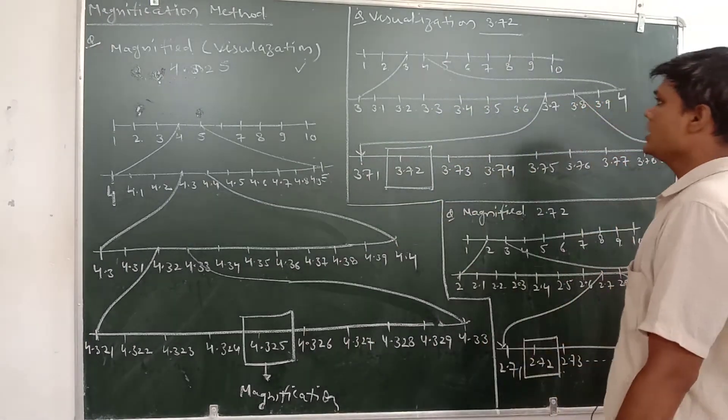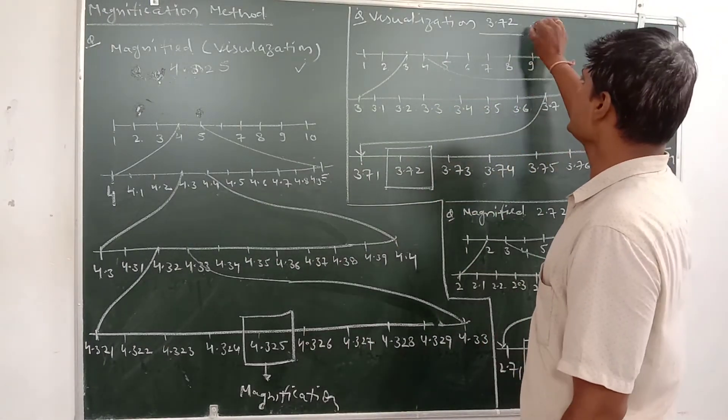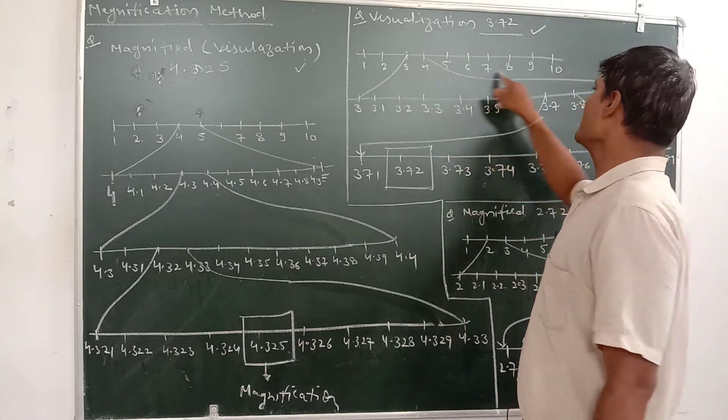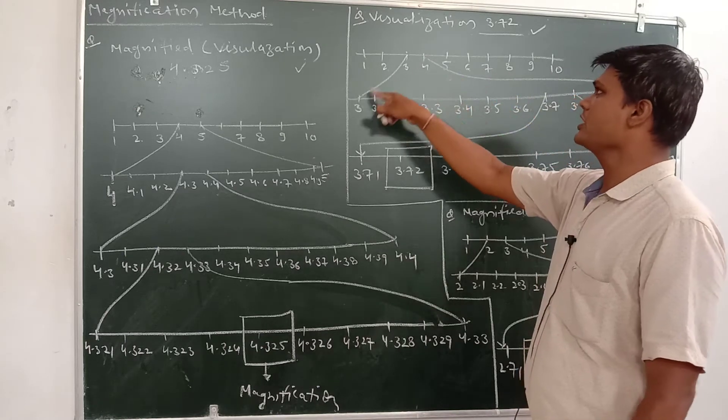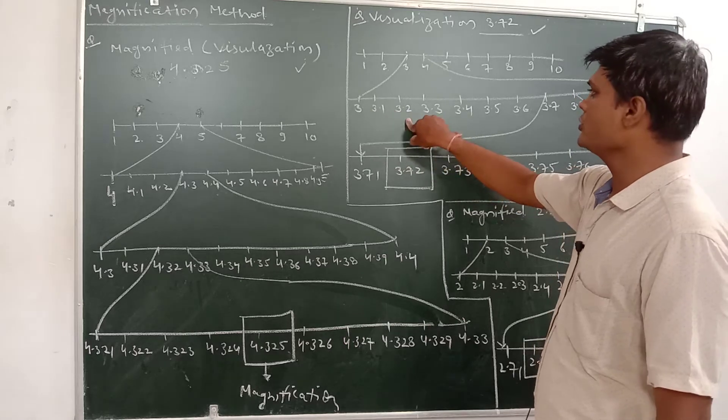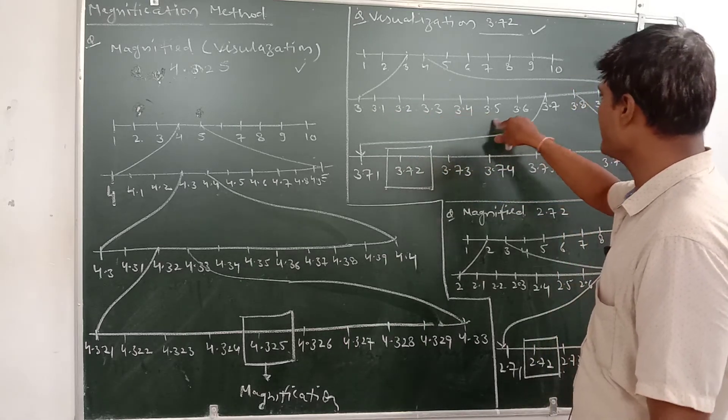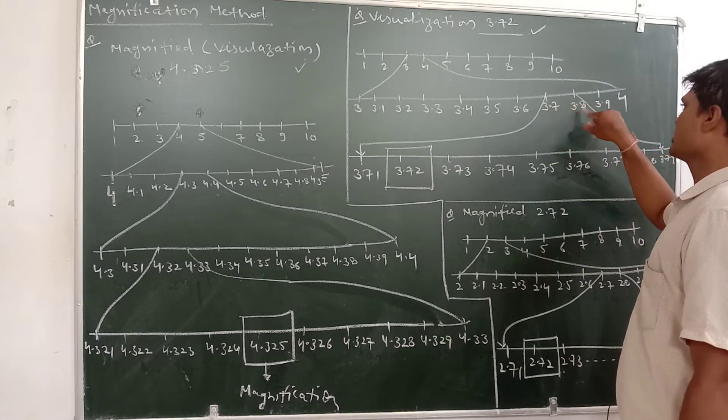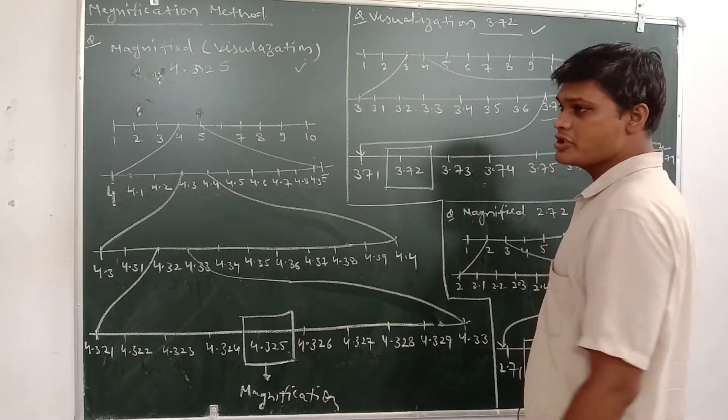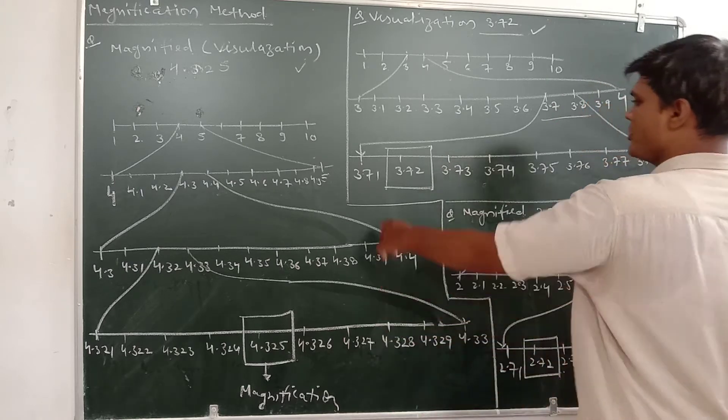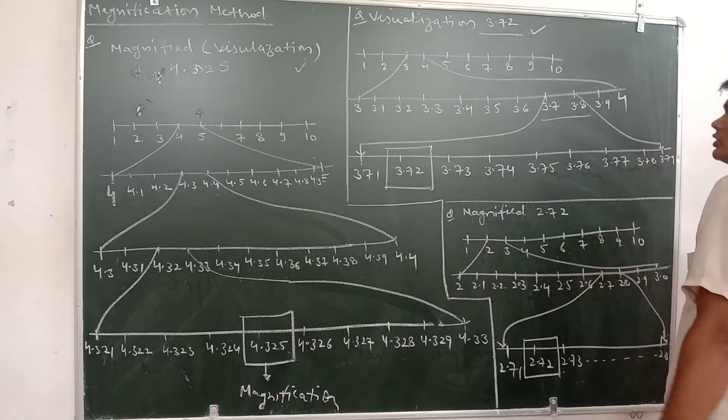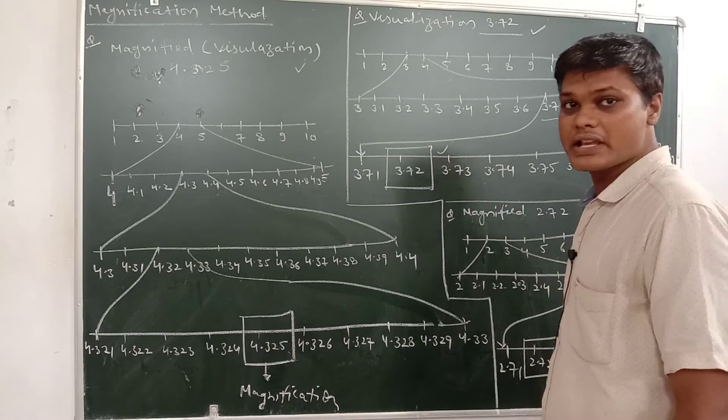Similarly you have to visualize 3.72. So here 3 comes, we put the counting, so between 3 and 4. To get 3.7, it will come between 3 and 4: first digit 3, 3.1, 3.2, 3.3, 3.4, 3.5, 3.6, 3.7, 3.8, 3.9, 4. Now we have 3.72, so it will come between 3.7 and 3.8. So here 3.71, 3.72 - we wrote it continuously. We got 3.72 here.